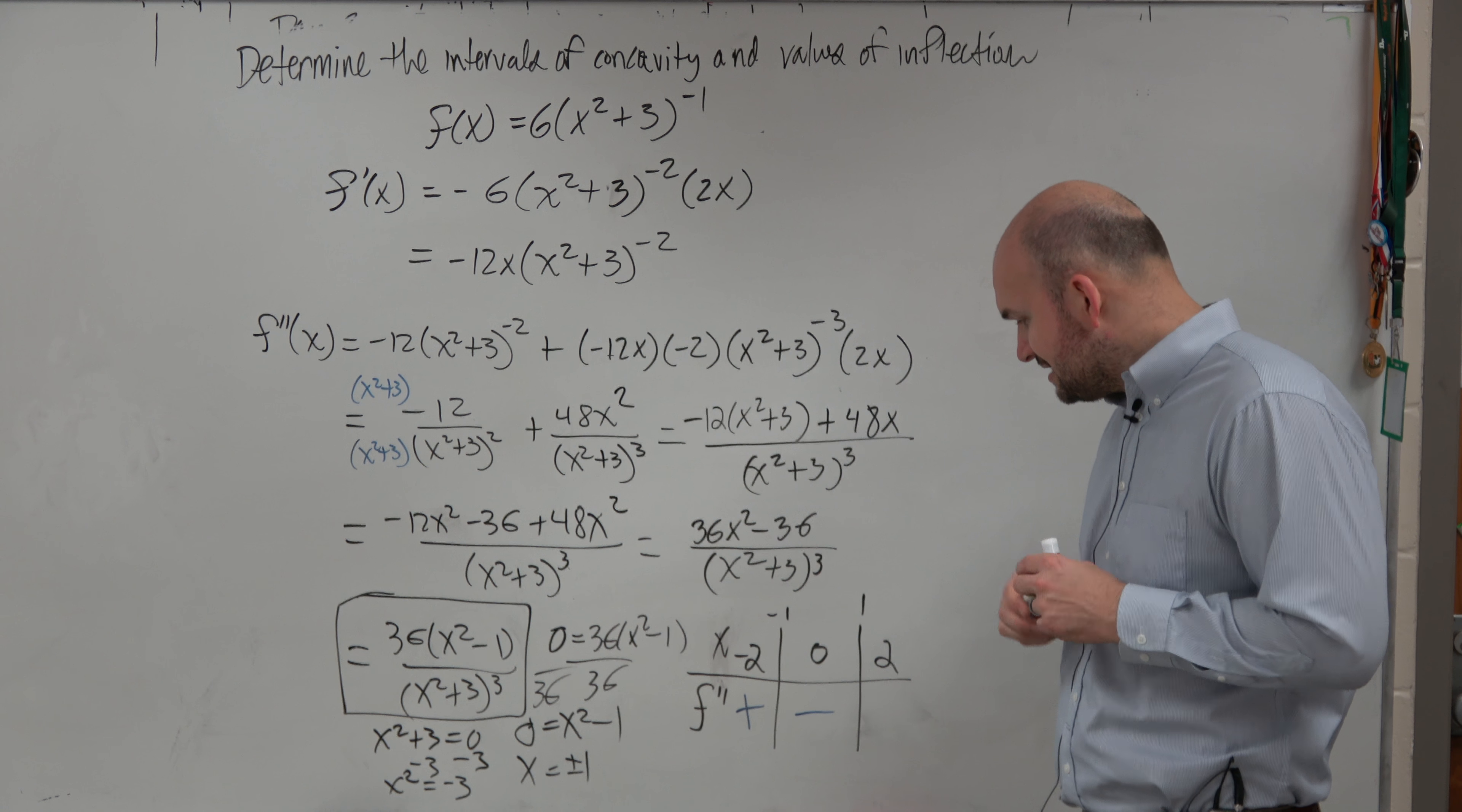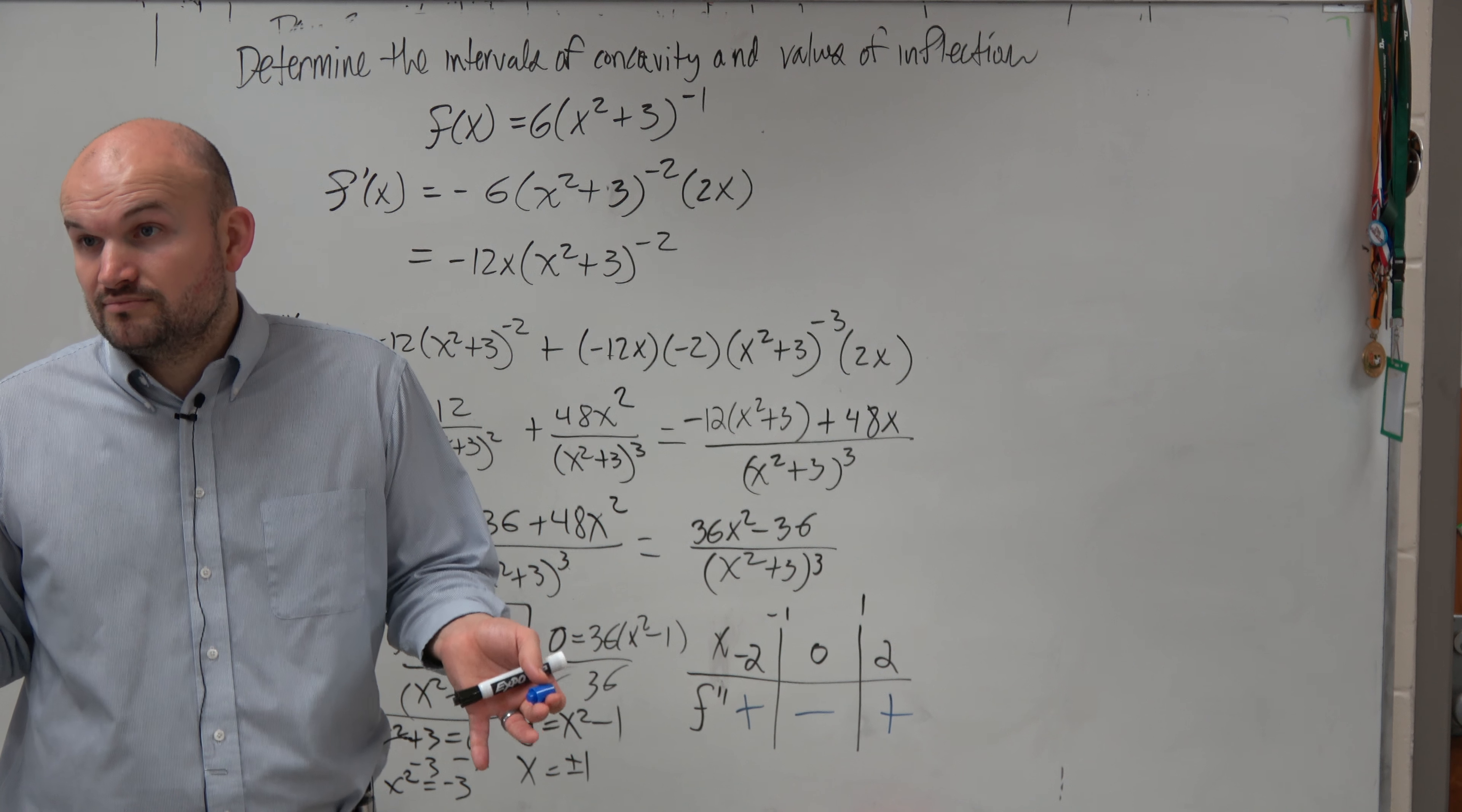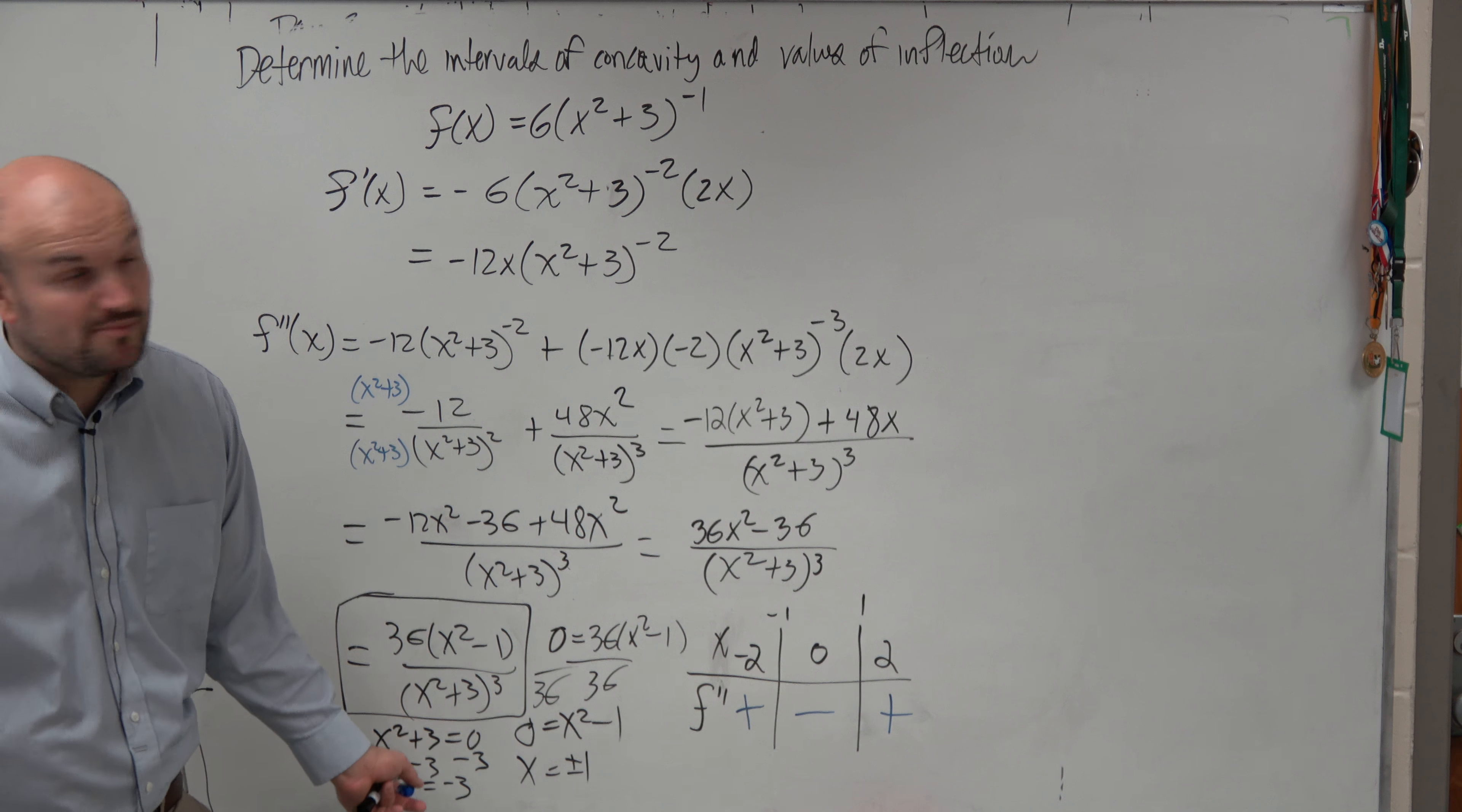And then at 2, you plug in 2, it's going to be positive over positive, which is another positive. Now, these are going to be our points of inflection. And do we change concavity here? Do we change from a positive to a negative and negative to a positive? Yeah. So we have concavity, and these are points of inflection. They're not like asymptotes or anything else that wouldn't be points of inflection.